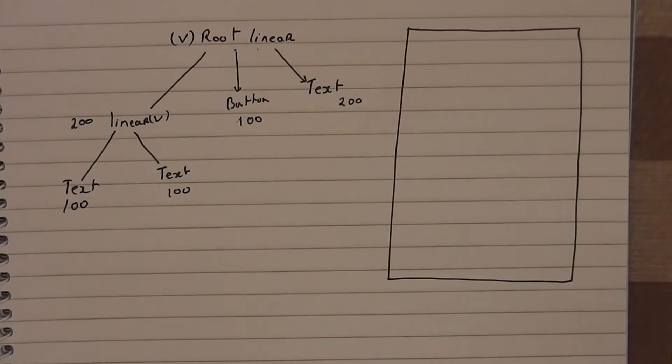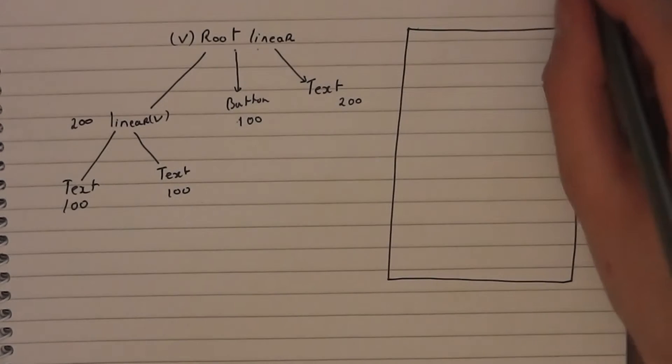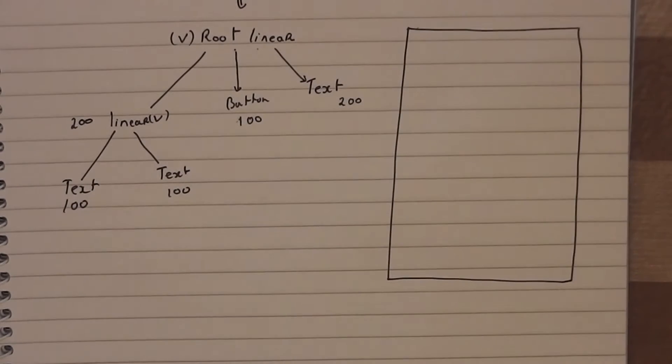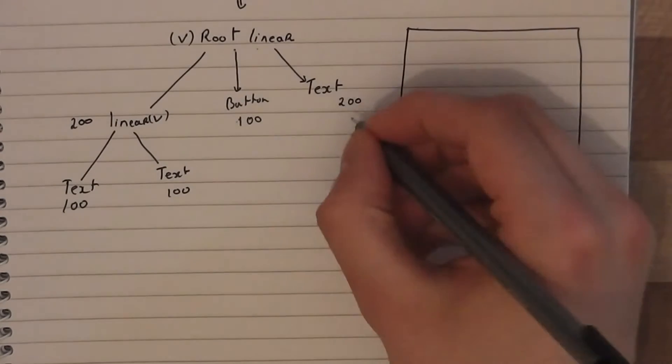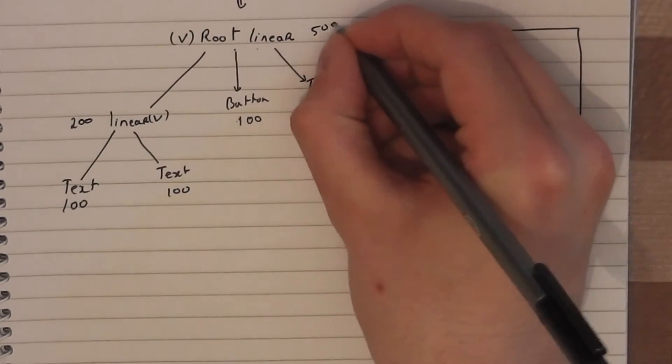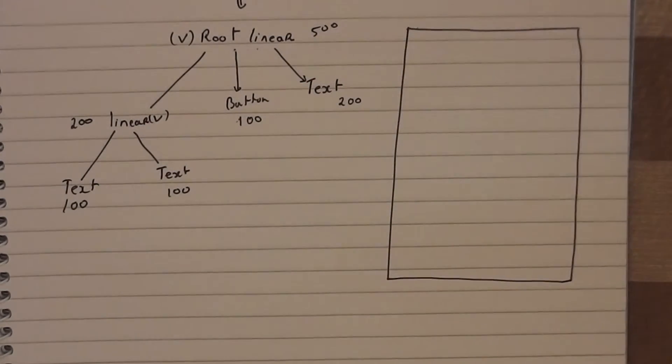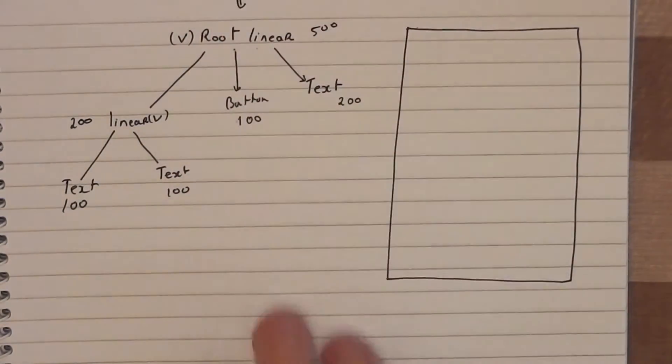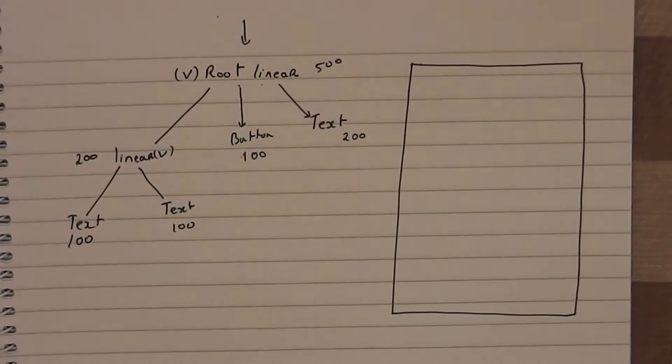Don't forget measure passes can happen multiple times. So now the layout call comes. And what happens on the layout call is all the view groups are asked to figure out where all their children sit. And essentially, the window now calls down and says, well, our root layout, I would like you to figure out your layout pass. Of course, it knows at this point that it's 500 high. So it says, sorry, the window, the view up off page. I'll actually just pull that down a little bit.